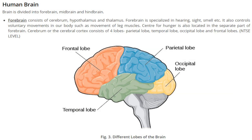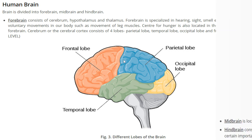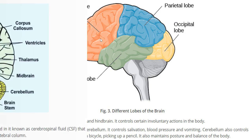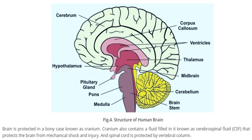This is the human brain. The brain is divided into the forebrain, the midbrain, and the hindbrain. Looking at the structure, we have the thalamus, hypothalamus, pituitary gland, cerebrum, corpus callosum, ventricles, the midbrain, cerebellum, and brainstem.